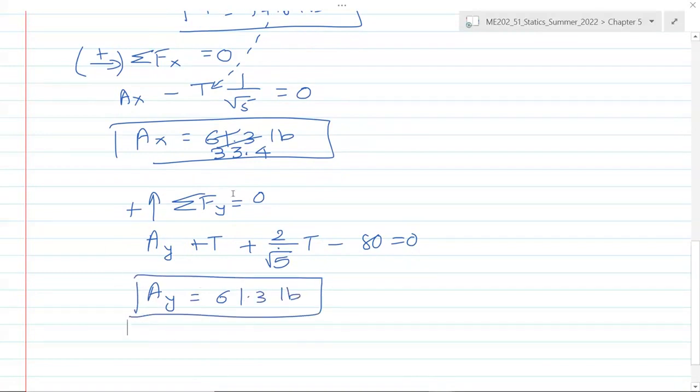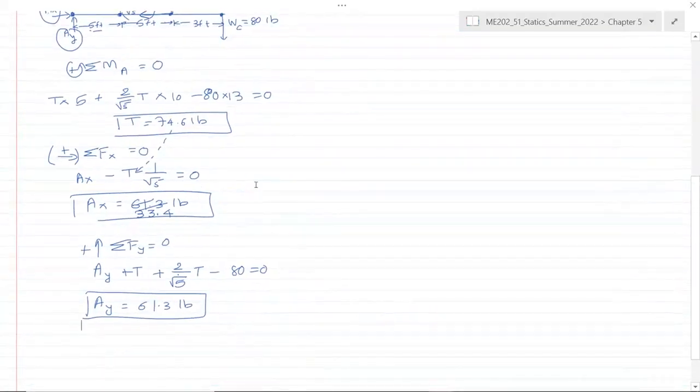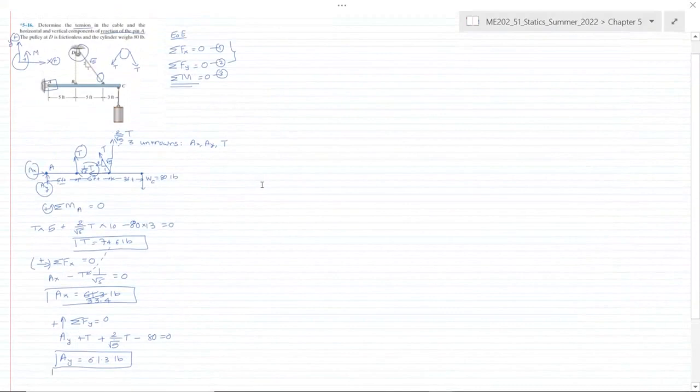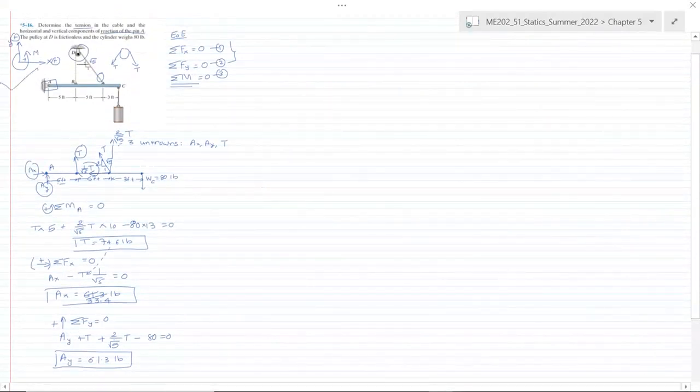We have solved for three unknowns using three equations of equilibrium. What we have done is we defined the coordinate system, we have written equations of equilibrium, we have identified the support reactions and unknown tension forces such as Ax, Ay, and T, and then we have indicated the known forces such as the weight of the cylinder. Then we applied sum of moments at A to eliminate those two unknowns, then the first equation of equilibrium, and then the second equation of equilibrium. We have solved for these three unknowns using our equations.